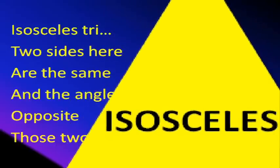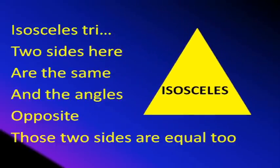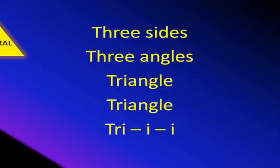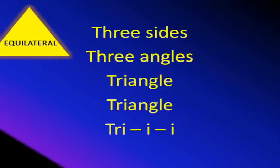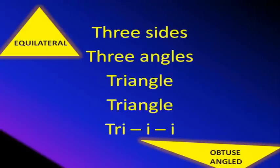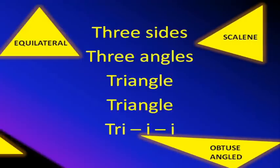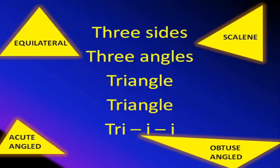Isosceles triangle: two sides here are the same. And the angles opposite those two sides are equal. Three sides, three angles.